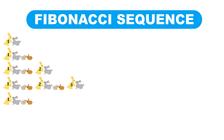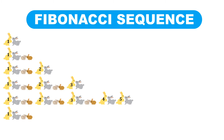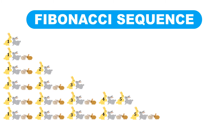After four months, the first pair gives birth to another pair of rabbits, the second pair gives birth to another pair of rabbits, the third pair gives birth to one pair of rabbits, and the fourth and fifth pairs become adults. After five months, the first pair gives birth to another pair of rabbits, and the second pair gives birth to another pair of rabbits each, while the sixth, seventh, and eighth pairs become adults. And this scenario goes on and on.